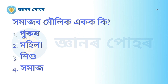The first question is: What is the basic unit of the society? Option 1: Man. Option 2: Woman. Option 3: Children. Option 4: Family. And the correct answer for this question is Option 4, family.